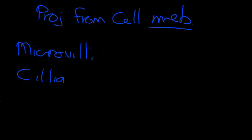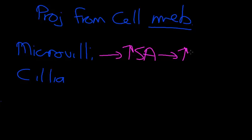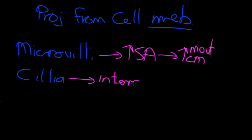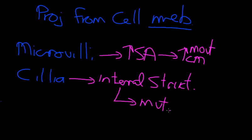Although they look similar, you should never confuse the two. Microvilli are about increasing surface area, and therefore increasing the ability for things to move across the cell membrane. Whereas cilia are large, they have internal structure, and they are about movement. They help things move either along the surface, or in their extreme version, called a flagella.